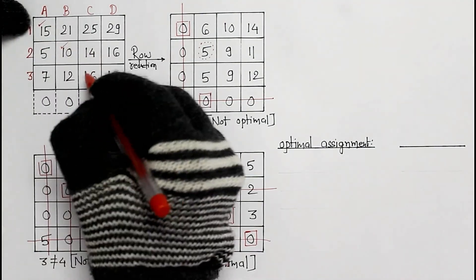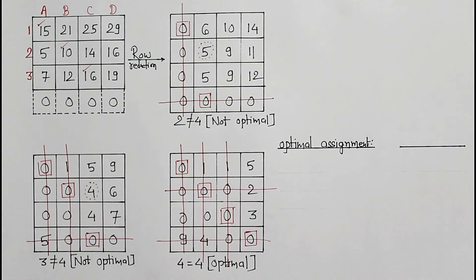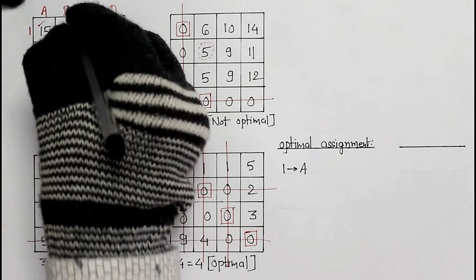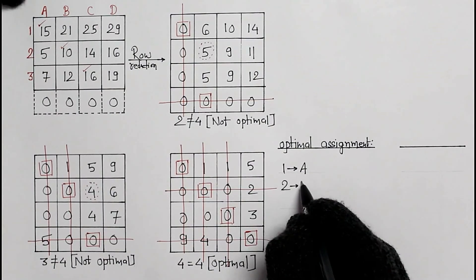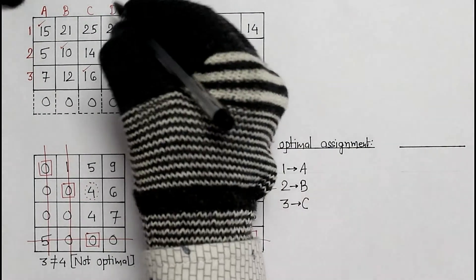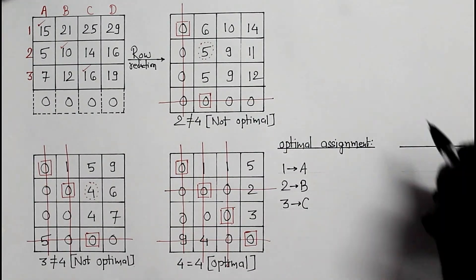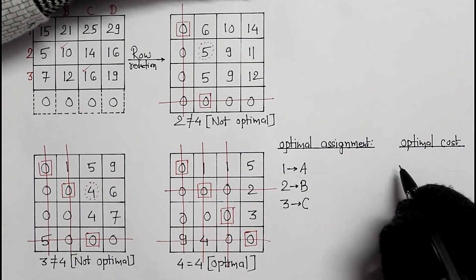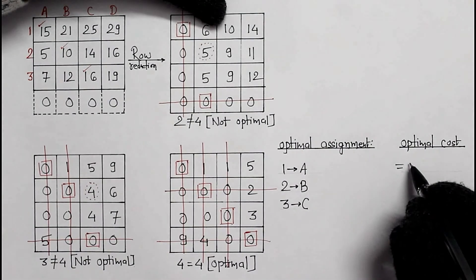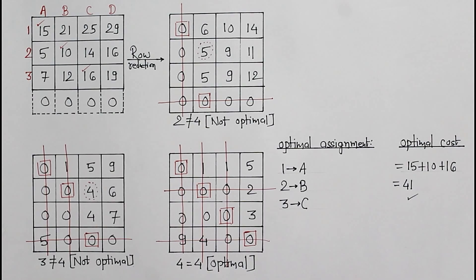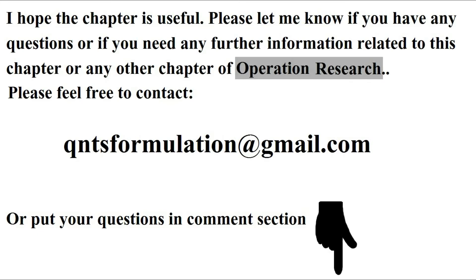These are the values: 1 to A, 2nd to B, 3rd to C, and nothing is assigned to D. Add these three values: 10 plus 16, 41 total optimal cost. Thank you.